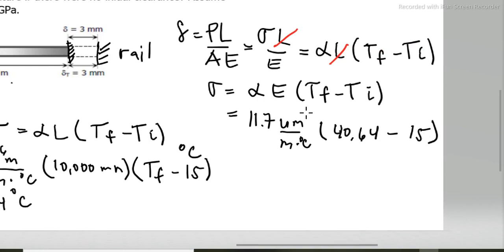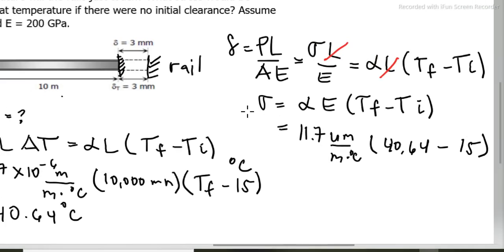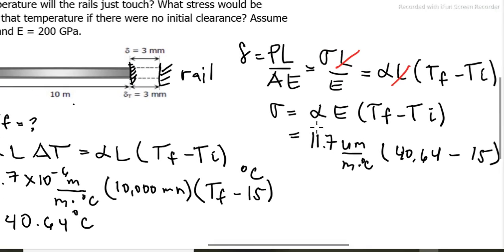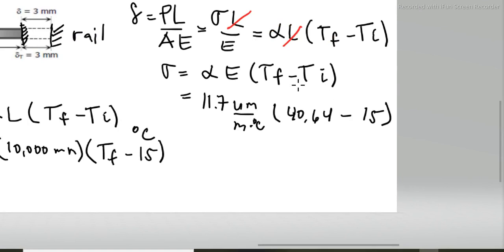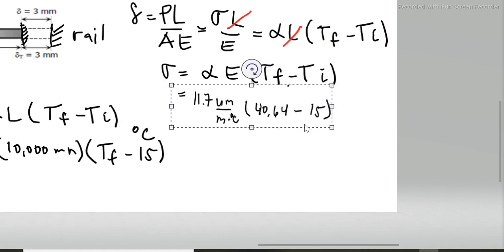Degree Celsius, and then modulus of elasticity of 200 gigapascals, or 200,000 newtons per mm squared.